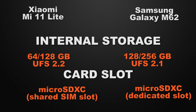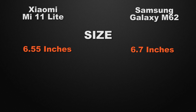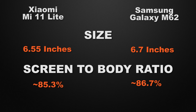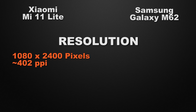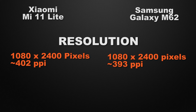Moving to the display features, the 11 Lite has a 6.55-inch display while the M62 has a 6.7-inch display, so M62 wins with the bigger screen size. For screen-to-body ratio, the 11 Lite has 85.3% while the M62 has 86.7%, so M62 wins with the larger ratio. For screen resolution, both devices come with Full HD Plus display, so it's a tie.